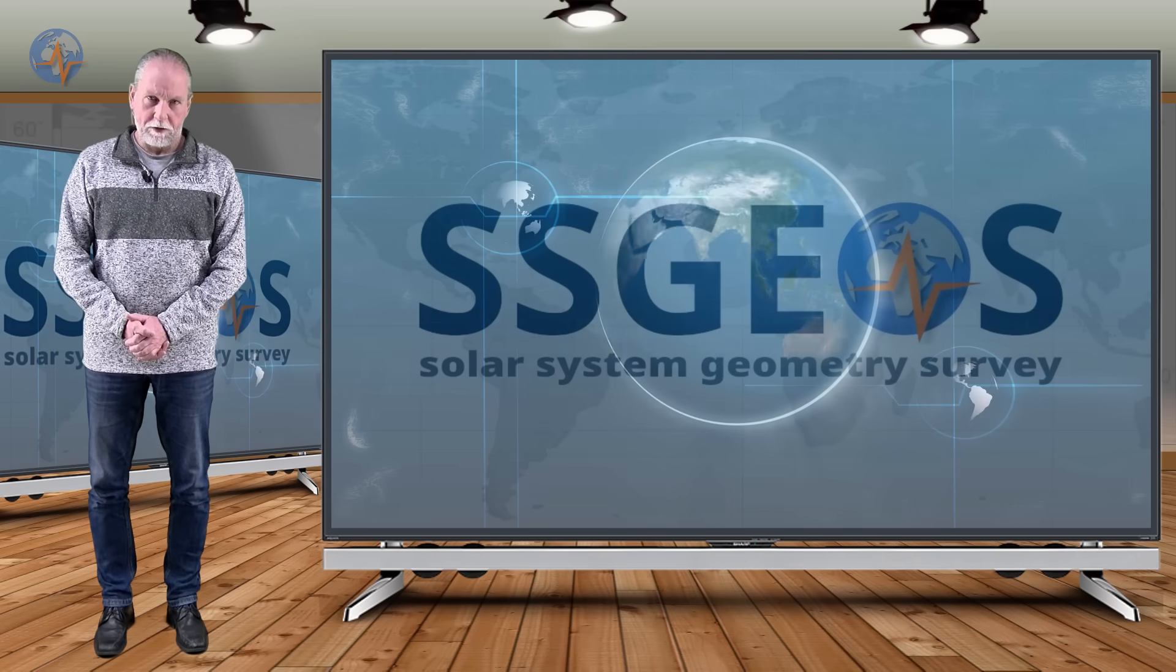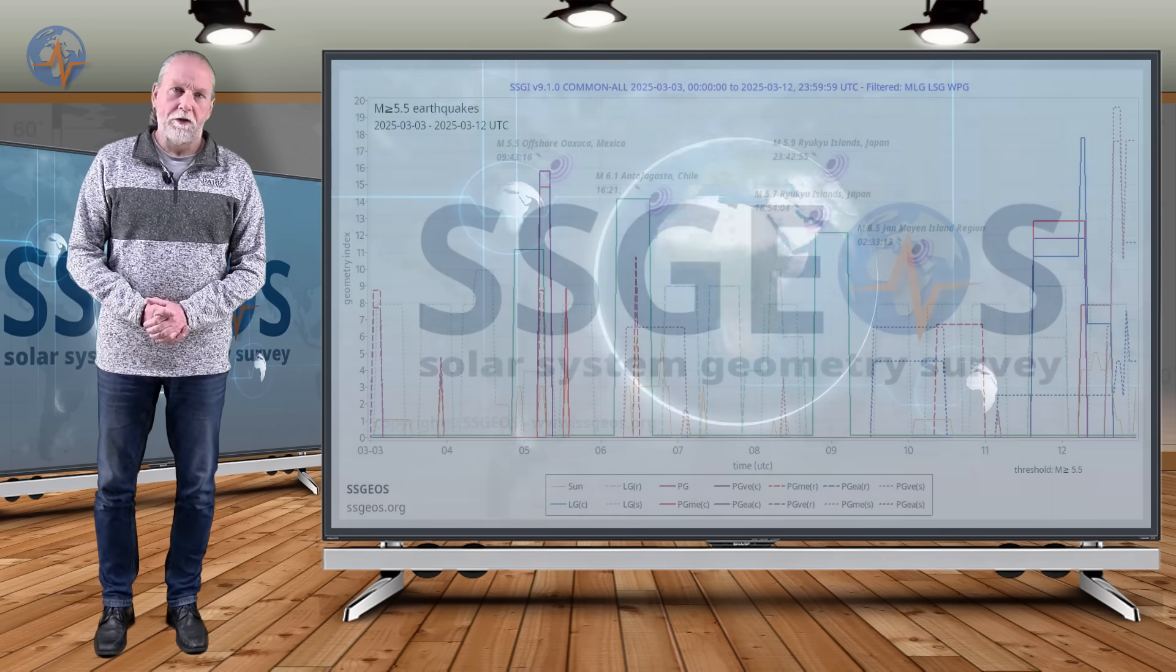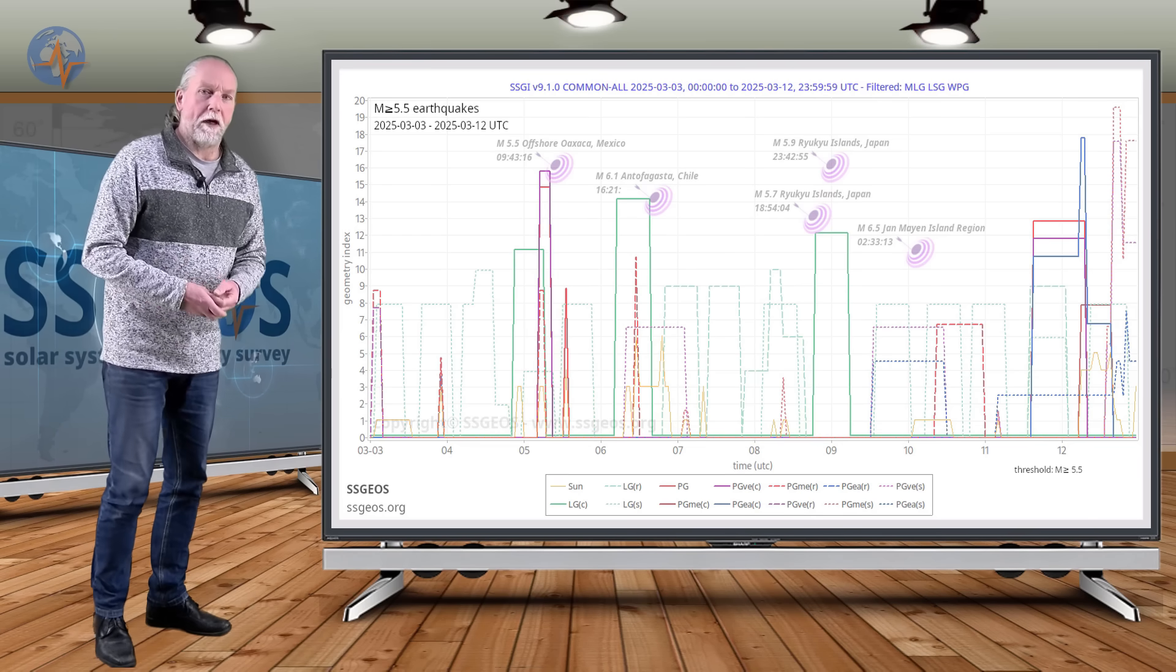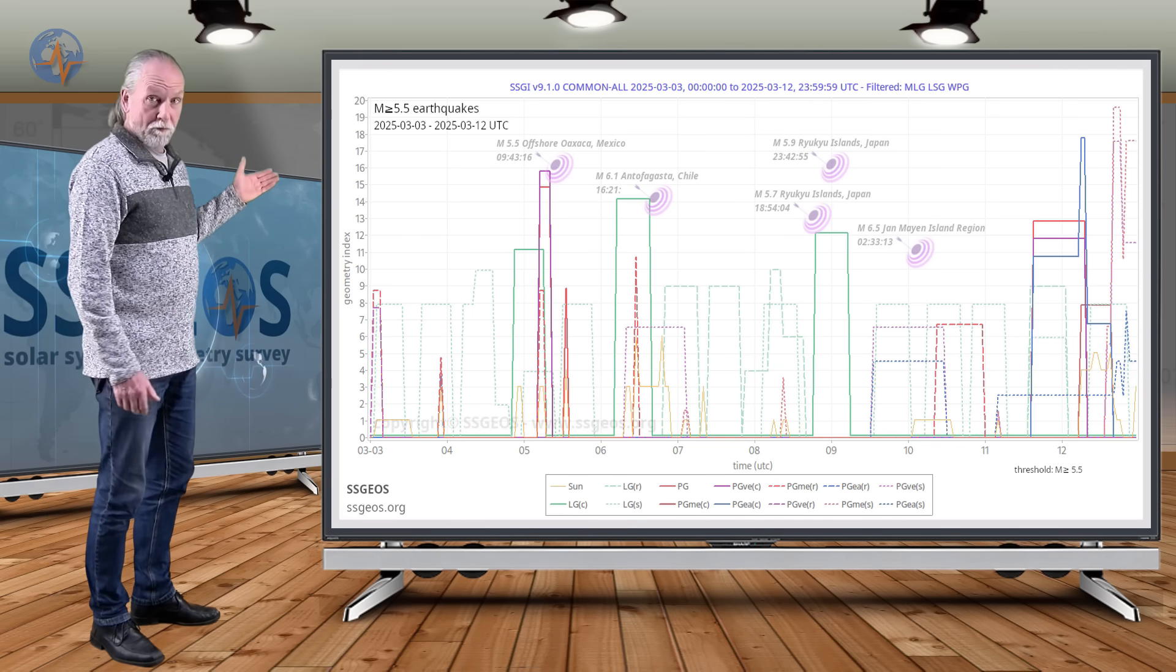Welcome to a new planetary and seismic update. As usual, we start with the SEGI graph of the previous timeframe with magnitude 5.5 and larger earthquakes. As you can see, we really didn't have much.